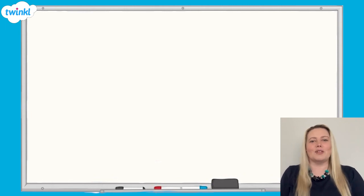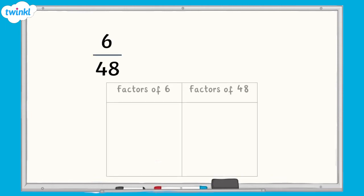Let's see if we can simplify this fraction. 6 48ths. The first step is to find the factors for the numerator and the denominator. The factors for 6 are 1, 2, 3 and 6.